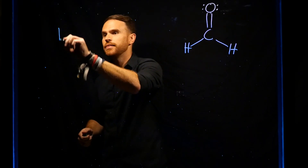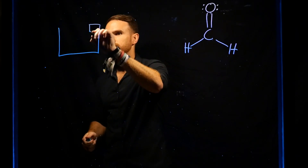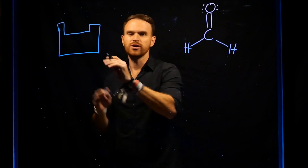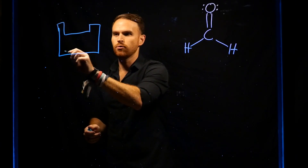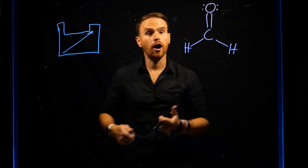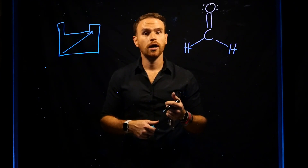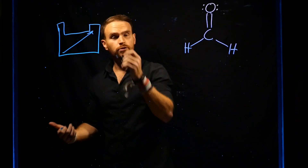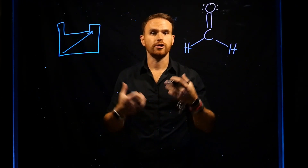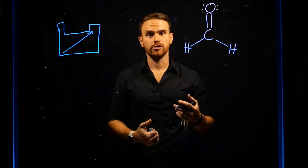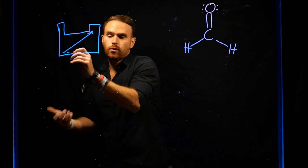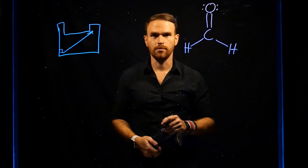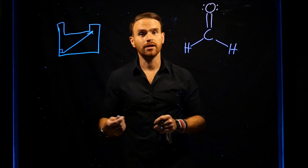Recall that there are electronegativity differences between atoms. As you go up and to the right of the periodic table, you get more and more electronegative atoms, which means fluorine, oxygen, and nitrogen are going to be some of the most electronegative. Compared to something like francium, which is not going to be very electronegative.